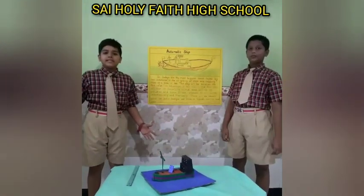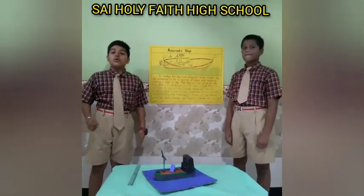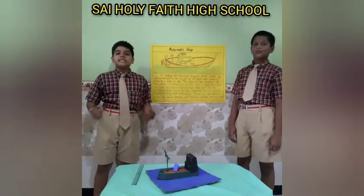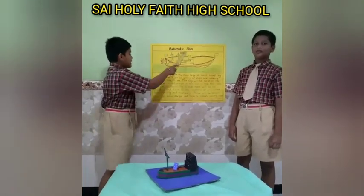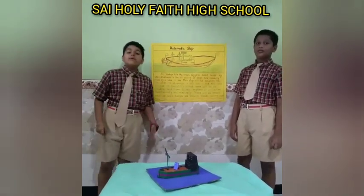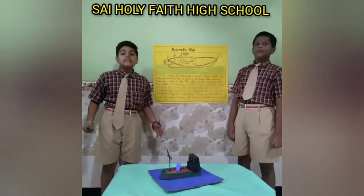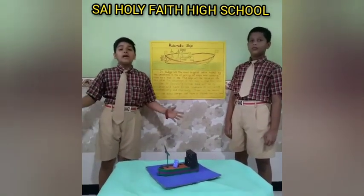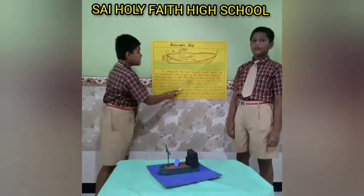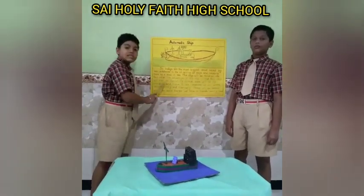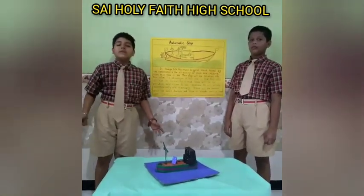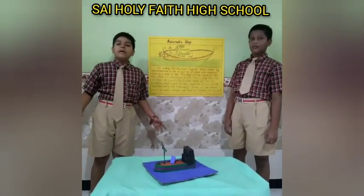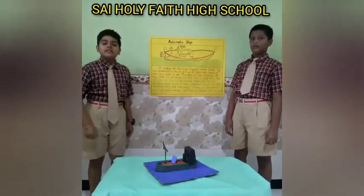We are the students of 6th grade and we are going to present our science presentation. Our science presentation name is Automatic Ship. In today's life, the biggest issue faced by sea creatures is oil spills and ships colliding with rocks in the sea. This ship will be a solution for this issue. The advantages of this ship: it will run on electricity so that there will be no pollution or harm to sea creatures.